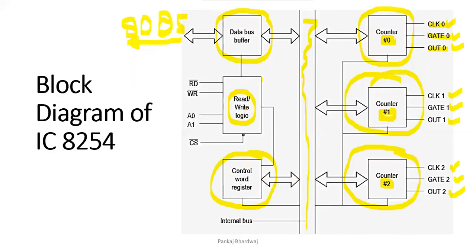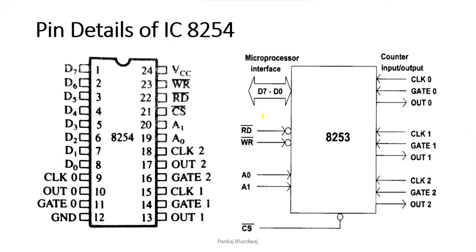To control the read/write logic, there are five different control signals: the chip select (CS bar) signal, read and write signals, and two address lines A0 and A1. Since there are three counters (0, 1, and 2), at least two address lines are needed to select among them, similar to the 8085 and 8086 address lines.